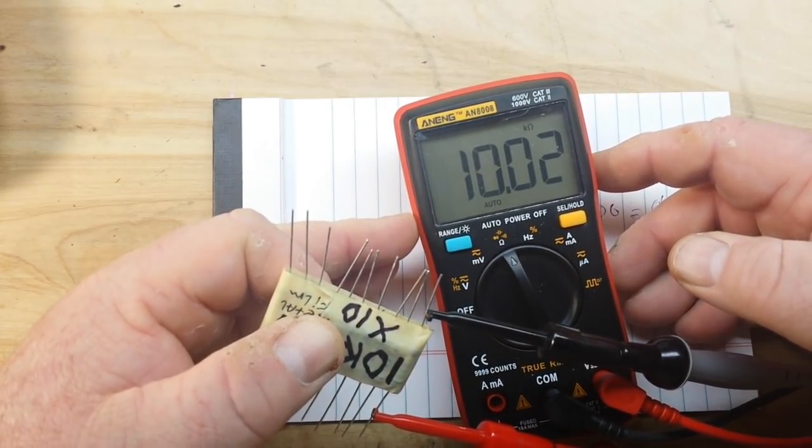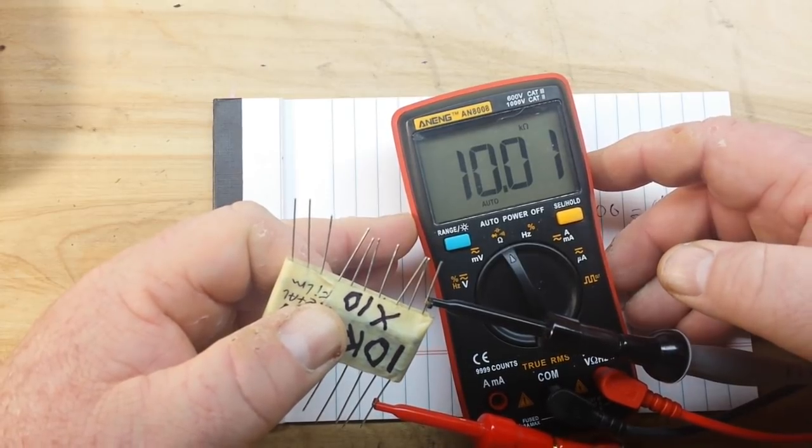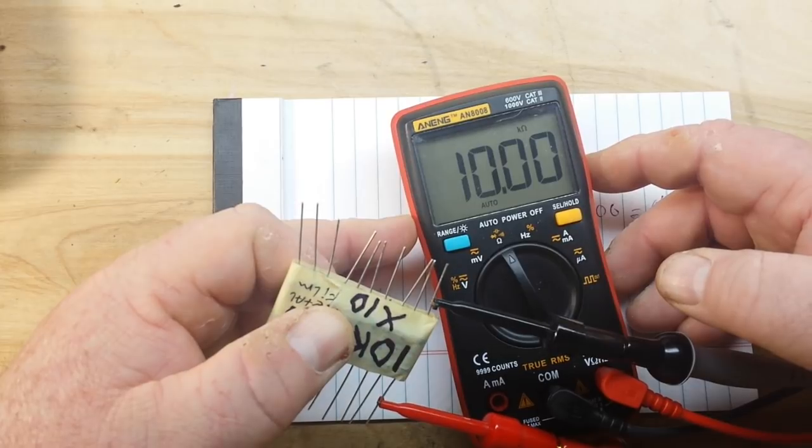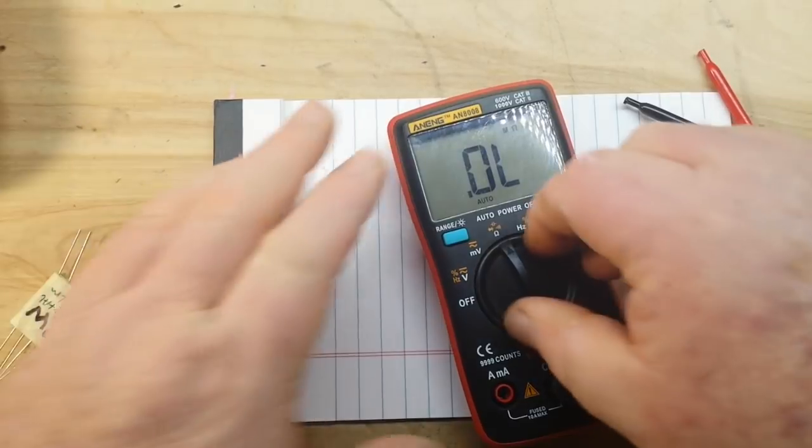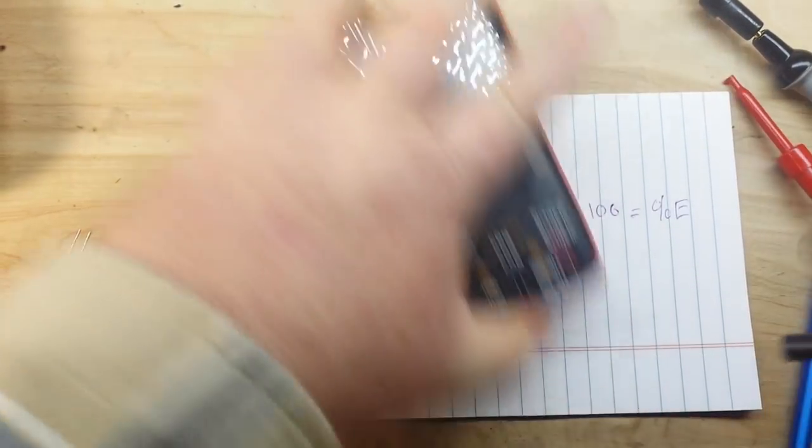10.02, 10.01. So it would seem like the Peak meter and the Aneng meter are the most closely related to each other. Does that mean they're the most correct? No, it just means they're the most closely related to each other.